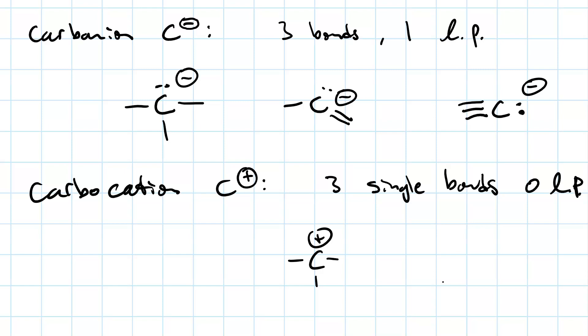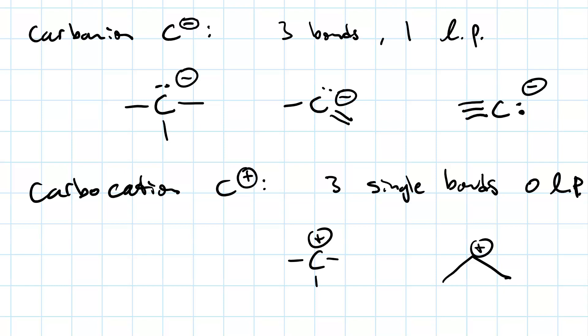Or sometimes you'll see it in a bond line structure like that. So that indicates that there is only one implied hydrogen attached to the central carbon, instead of two, as you would normally have.